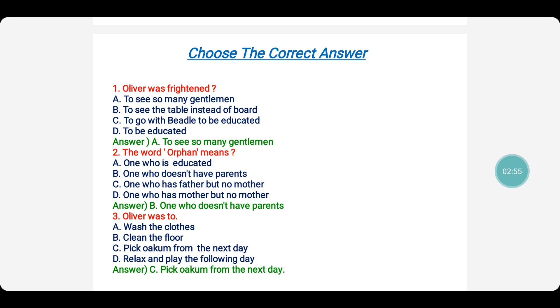The word orphan means one who is educated, one who does not have parents, one who has father but no mother, one who has mother but no father. Now look children, you all know that an orphan is a person who does not have either a father or a mother.